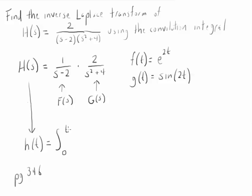It's the integral from 0 to T of F of T minus tau times G of tau d tau. There's nothing special about tau here. It's just another variable that we're integrating with respect to.